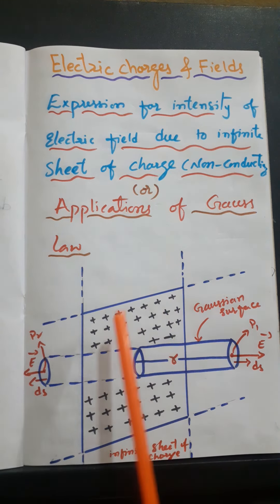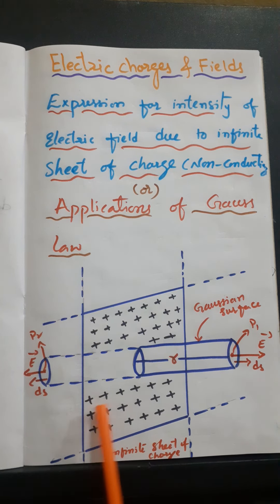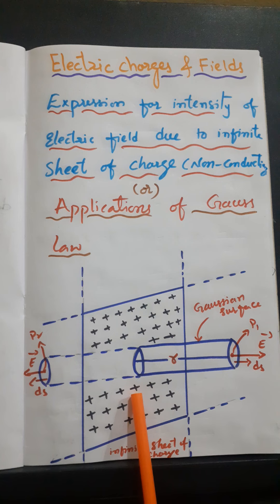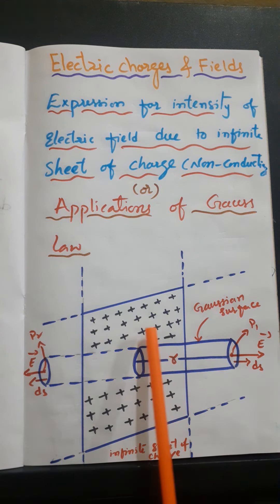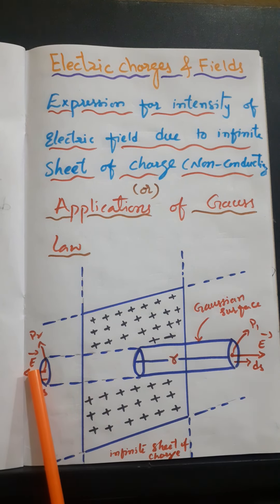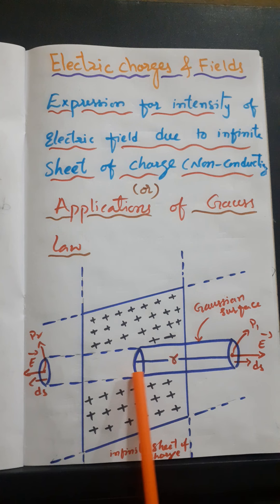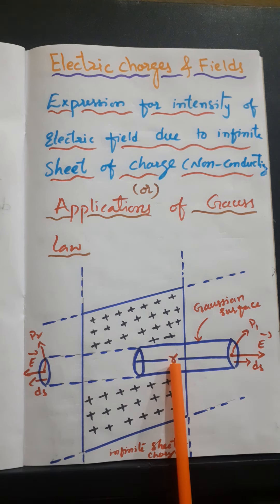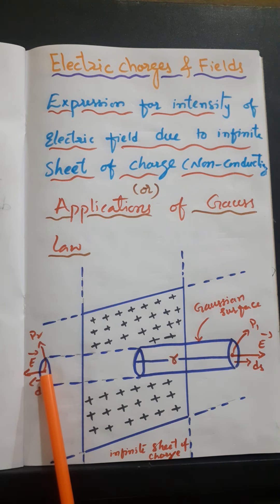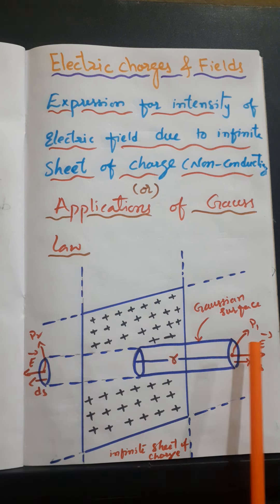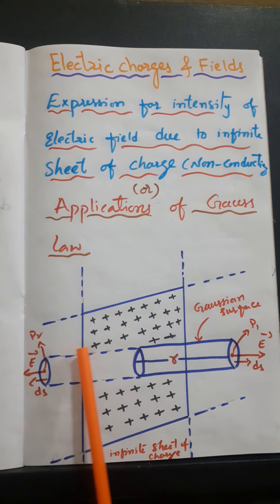For that purpose, let us consider an infinite sheet of charge. This is a thin, non-conducting sheet. Our aim is to calculate the intensity of electric field at a point P1 and at a point P2. Point P1 is on one side of the sheet and point P2 is on the other side. From the center to point P1, the distance is r, and these two points are symmetrical to each other. Next, we imagine a cylinder from P1 to P2.